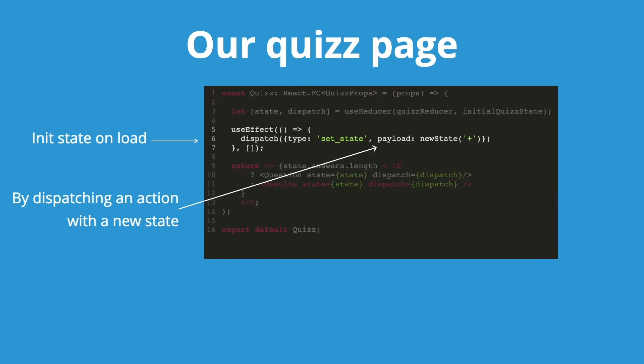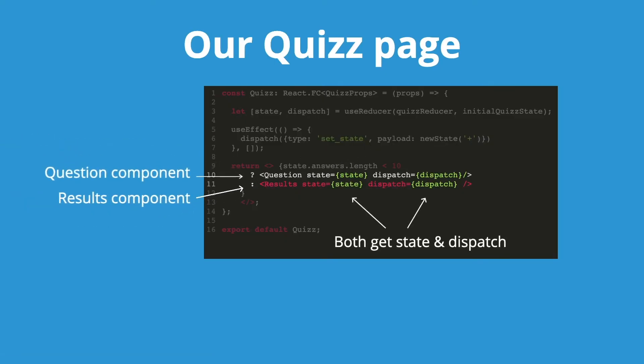We can see it in the useEffect hook we're using. This dispatches an initial set state with a random state when the component is initially loaded. Then we take the state and dispatch and use them as parameters for two components: the question and the results. These are displayed depending on how many questions have been answered — if there are 10, the results are displayed; if there are fewer than 10, the questions are displayed.